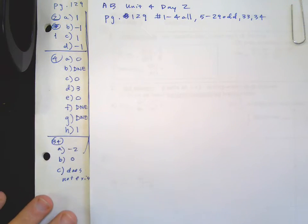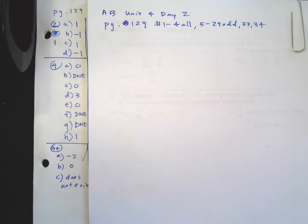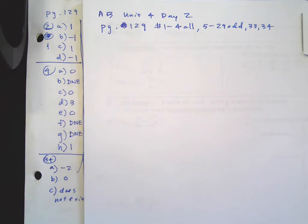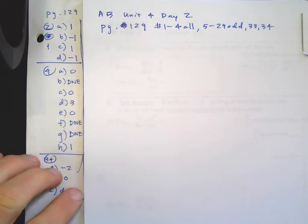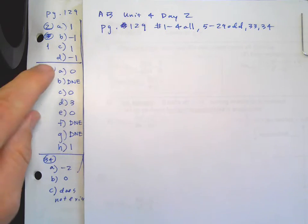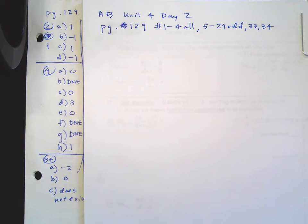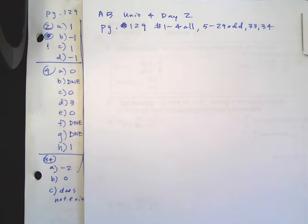Alright, Calc AB, day four, office hours. We go over the homework. These are the few even problems on it that I assigned: two, four, and 34. So you can check those real quick — pause the video so you can check them. DNE stands for does not exist.